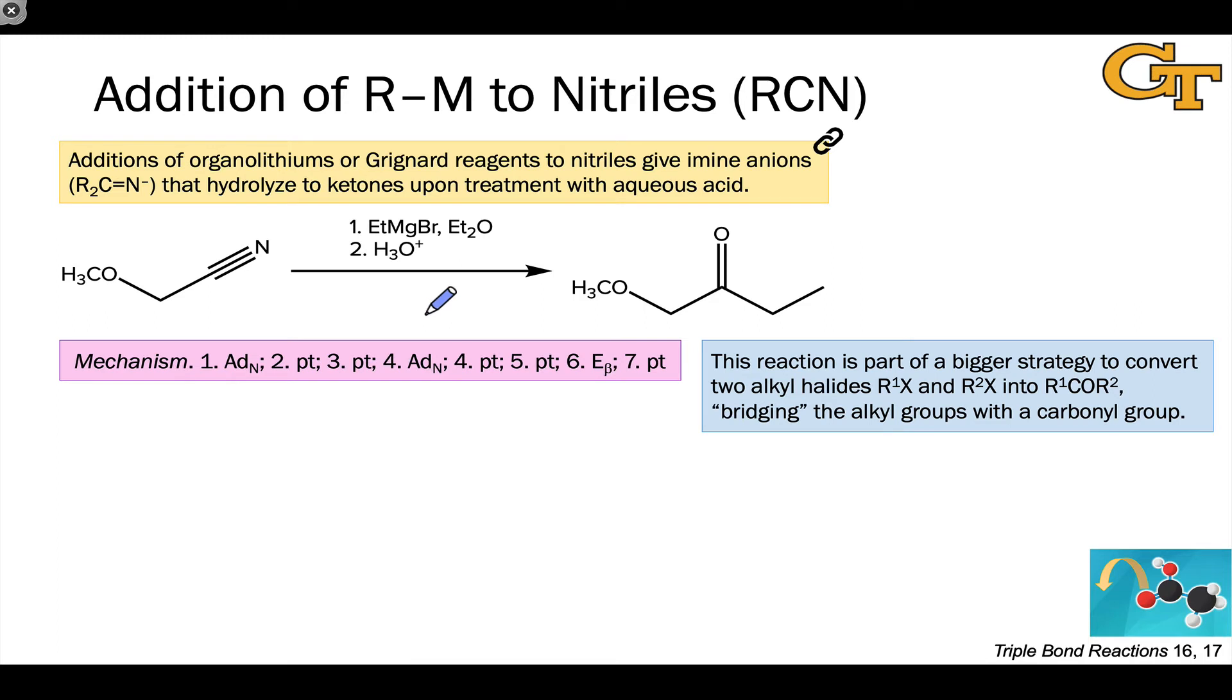We've talked about nitriles as a member of the carboxylic acid derivative class. And one thing to point out about the nitrile is that the C≡N pi bond is polarized toward nitrogen. This means that the carbon is partially positively charged and potentially electrophilic. We're not super used to seeing that carbon act as an electrophile. It does so in the hydrolysis of nitriles to form amides. And it can also act as an electrophile when we treat a nitrile with a strong nucleophile, a carbanionic nucleophile, like an organolithium or a Grignard reagent.